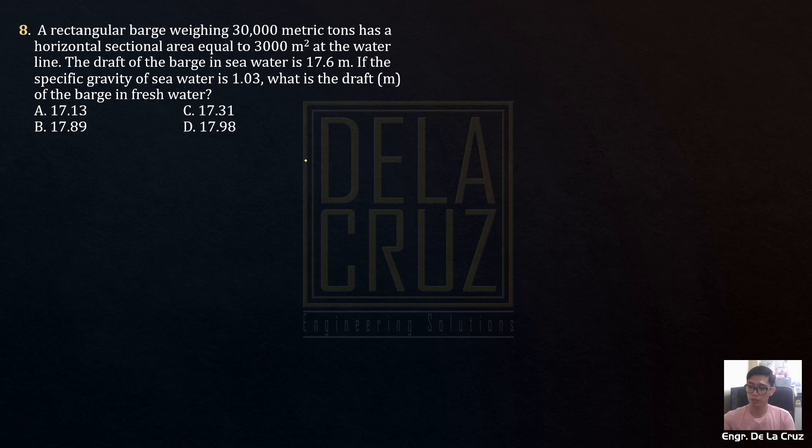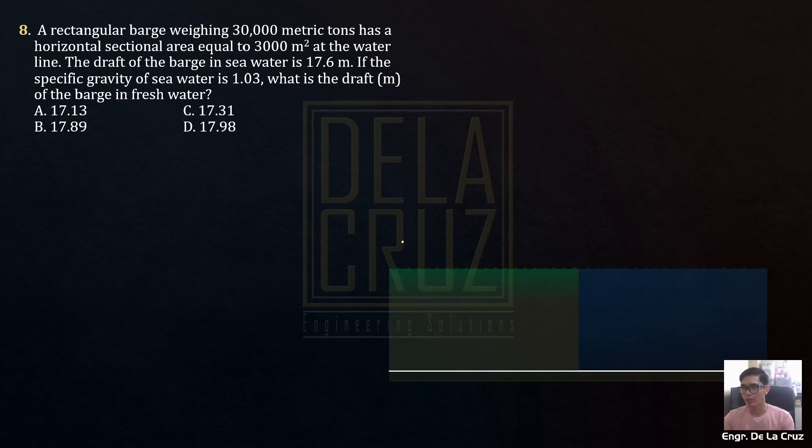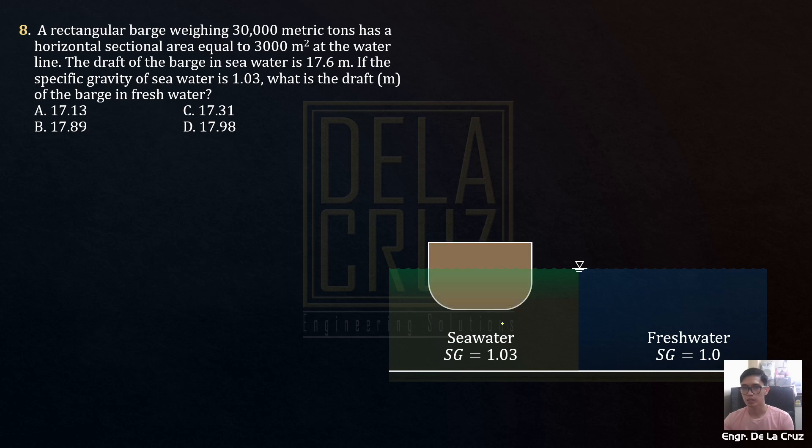So this problem is a bit confusing in buoyancy topic. Why does the draft change? How does it change? Anyway, let's analyze that one. Let's say this is our water surface. Seawater we have, and fresh water. The seawater we have specific gravity of 1.03 and for the fresh water of course the specific gravity of 1.0. When the barge is in seawater, the draft is 17.6 meters. By the way, the mass of the barge is 30,000 metric tons. That's equivalent to 30 million kilograms. Simply multiply by 1,000.